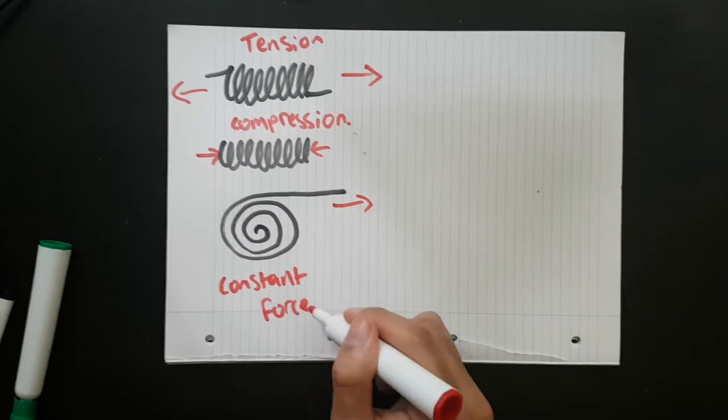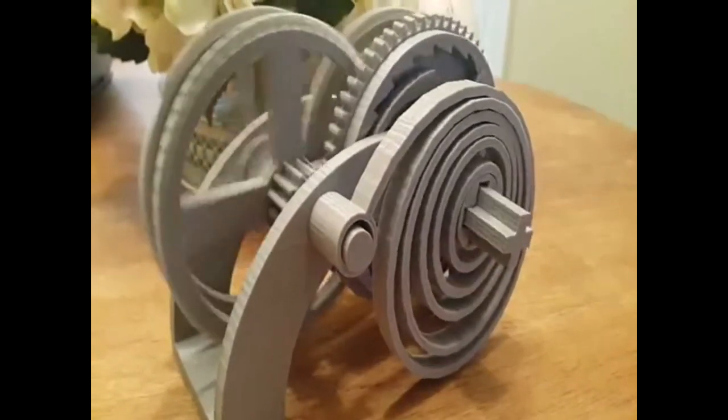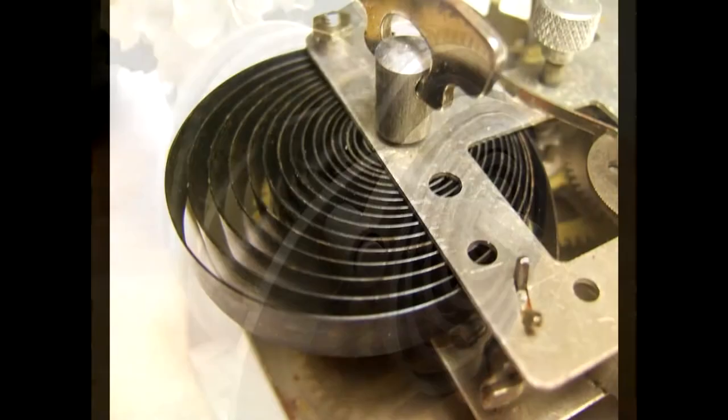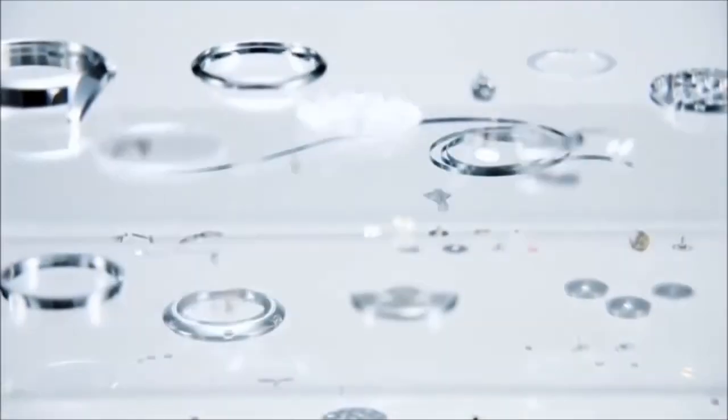Constant force springs use wire that is tightly wound together. They then release the energy gradually. They are commonly used in clocks.